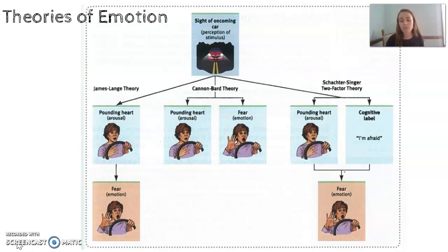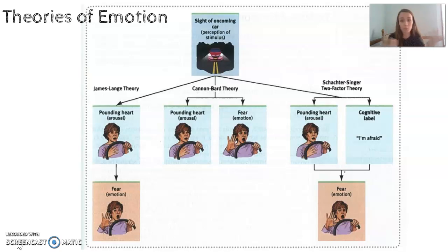The next is the Schachter-Singer two-factor theory, which says you have to have an experience of understanding the situation. The first thing is the car coming down the road and your heart is racing, but you also have to have a cognitive interpretation of the situation — understanding what those yellow lines mean, realizing this is a dangerous situation with the car coming toward you. So you have a cognitive appraisal of the situation, and because you've put that together, you know that you are fearful and experiencing fear.